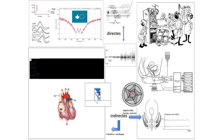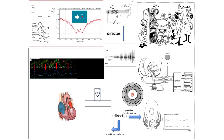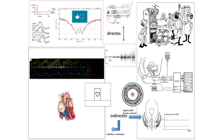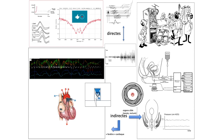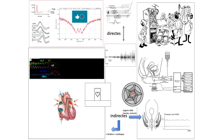Pour la mesure directe, il suffit de mettre des électrodes dans un nerf végétatif et d'enregistrer l'activité de ce nerf sympathique ou parasympathique. Cela procède de l'expérimentation clinique et ne se fait absolument pas en pratique quotidienne. En pratique, on utilise des méthodes indirectes en passant par le cœur : on ouvre une fenêtre sur l'activité cardiaque et notamment la fréquence cardiaque, qui est le reflet général de l'activité du système nerveux végétatif.